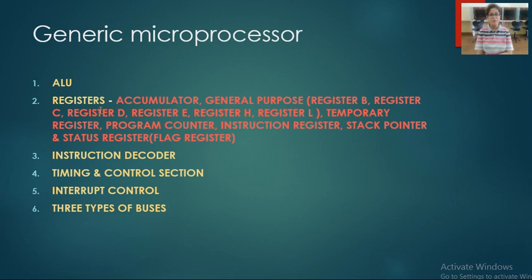There are different types of registers in a microprocessor. The names are: accumulator, general purpose registers (B, C, D, E, H, L), temporary register, program counter, instruction register, stack pointer and status register.